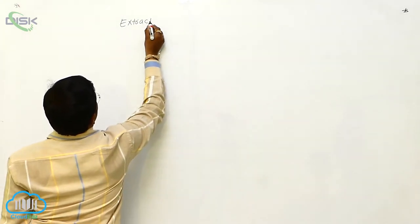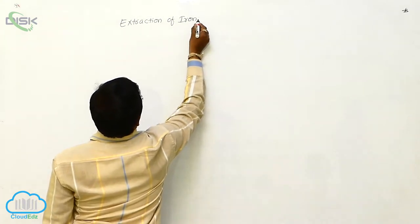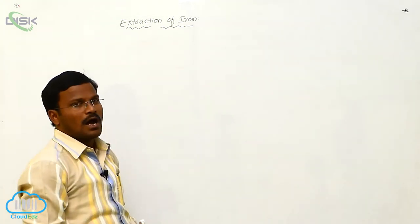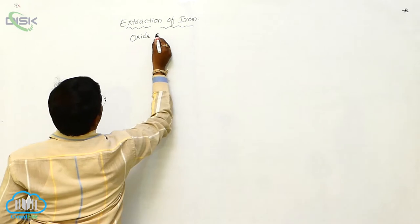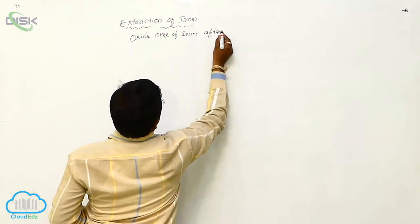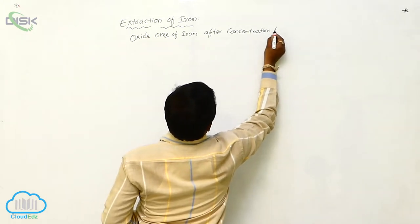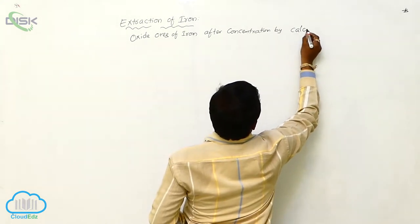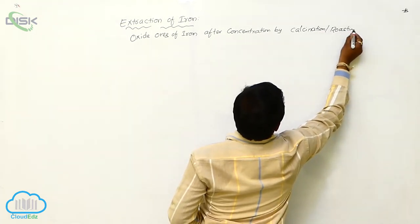Extraction of iron from iron ores. Remember, other forms of iron ores are converted into oxide form. That means oxide ores of iron after concentration by calcination or roasting.